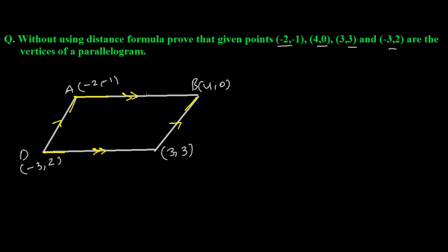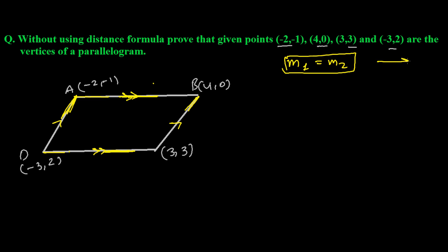We can show lines are parallel only when the angle made by AB and the angle made by DC are the same — meaning the slope of AB equals the slope of CD, then they are parallel. Similarly, if the slope of AD equals the slope of BC, we can say those are parallel. The condition for parallelism is: if two lines are parallel, then their slopes m1 equals m2.